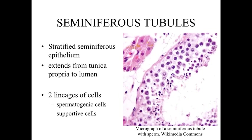The seminiferous tubules have a stratified seminiferous epithelium, where cells are differentiated very differently from other epithelial cells we've seen. They extend from the basal lamina — referred to here as the tunica propria — up to the lumen. Within the seminiferous tubules there are two lineages of cells: spermatogenic cells, which are capable of dividing and producing mature sperm cells, and a class of supportive cells present to support and nourish the development of the spermatogenic cells.